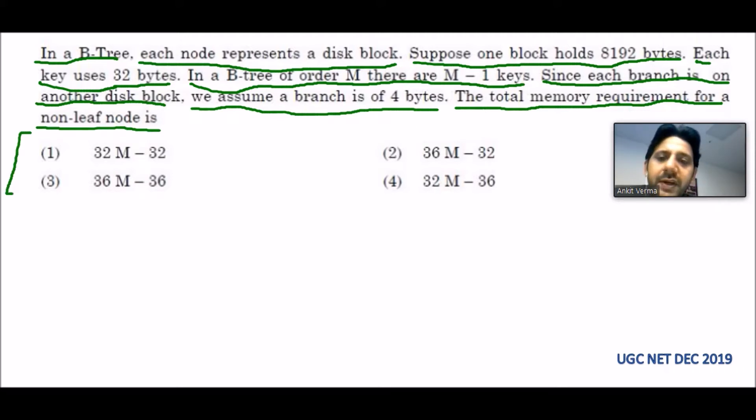We know that a B-tree is of this type. If we have one key, then it will have 2 children. A B-tree of order M has M-1 keys. Let's suppose it is of order 2, meaning 2 children are there, so there will be 1 key.